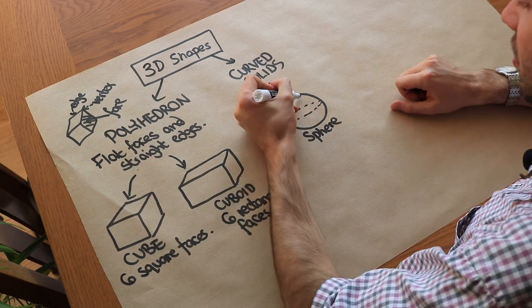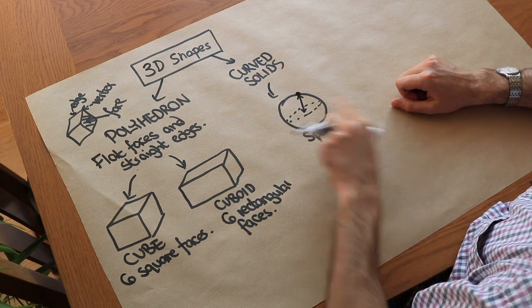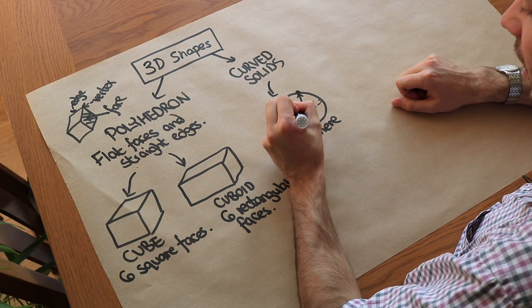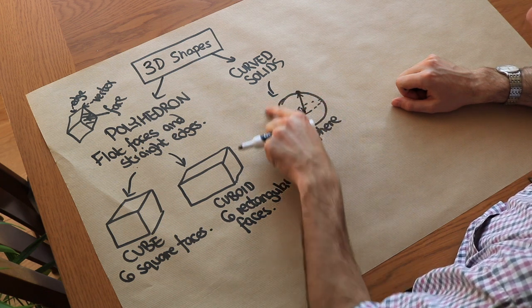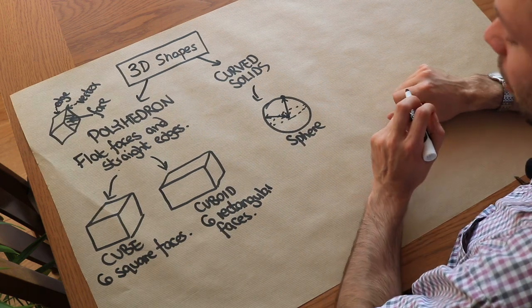And I'm not going to write the definition but I'll just explain. The definition of a sphere is that any point on the surface of the sphere is the same distance from some particular centre. So the centre of the earth, every point on the surface of the earth is the same distance from the centre. That's the definition of a sphere.